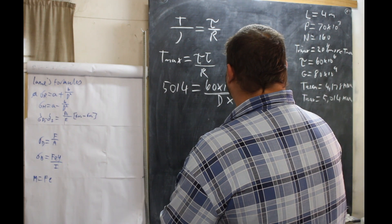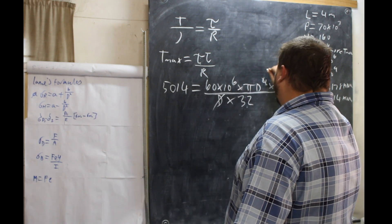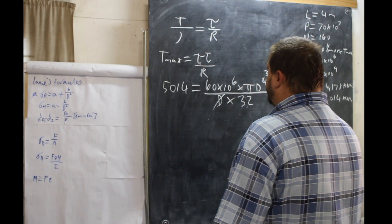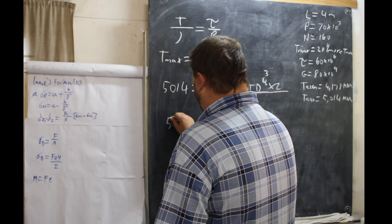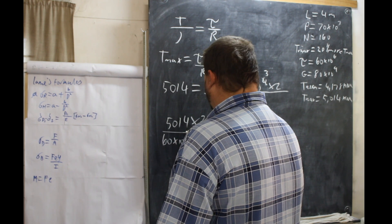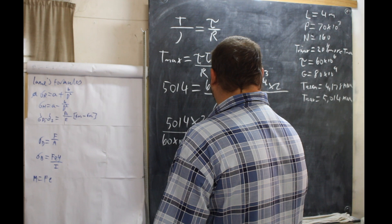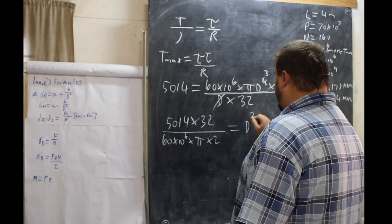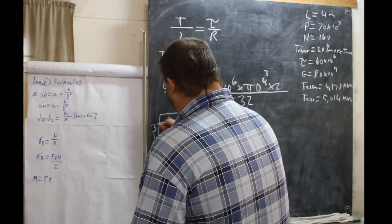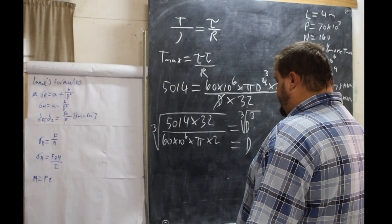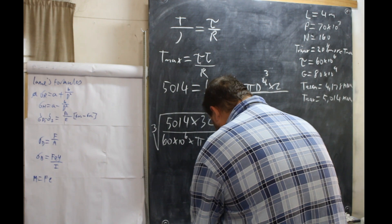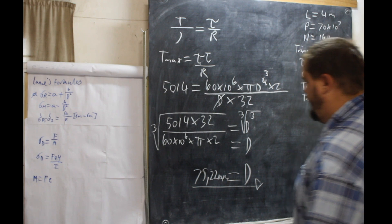Now we can eliminate — that D cancels with the D in the numerator, giving us D³. Making D the subject of the formula: D³ equals 5,014 × 32 divided by 60 × 10⁶ × π × 2. Taking the cube root of both sides, D equals 75.22 mm. And that is our final answer.